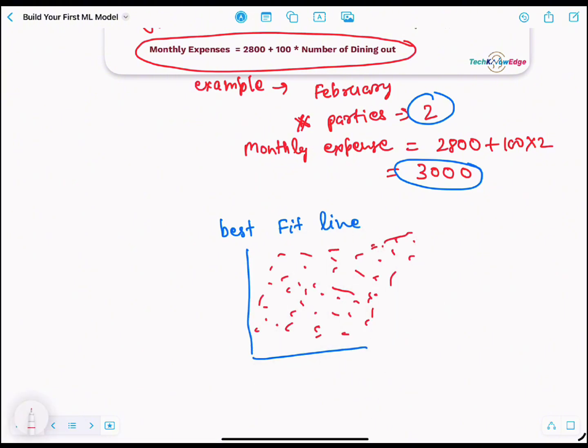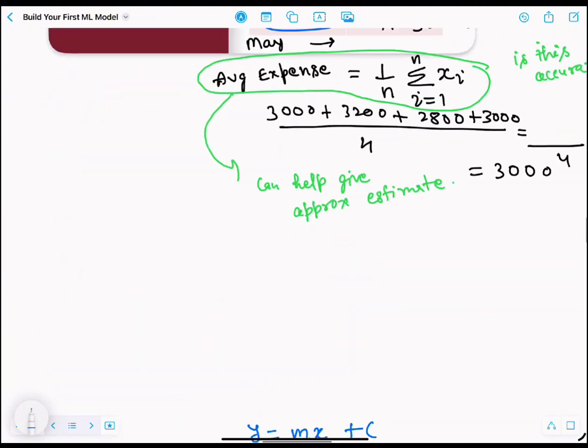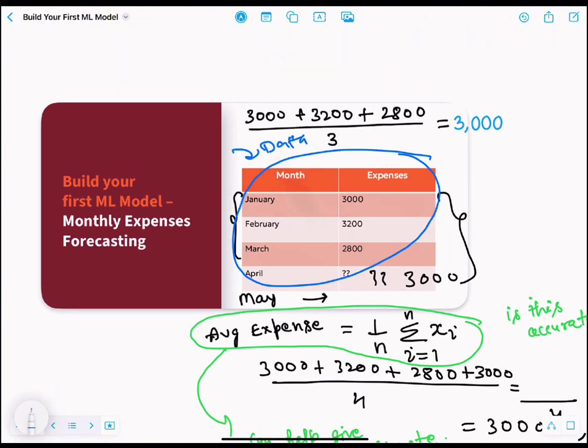So your best fit line will look something like this. This line will have minimum errors in the model - we will cover in detail in our next videos. So what did we do? We used data, which is observations. We got patterns from it, and then made predictions.